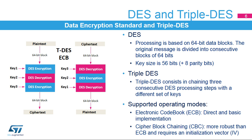ECB is a direct implementation, block after block, with no dependencies between them. It can be used safely with small messages. For larger messages, CBC is preferred, since it efficiently randomizes the encrypted output. Triple DES consists in chaining three consecutive DES operations for the same block of 64 bits with either the same key or with three different keys. As with DES, block chaining can follow either ECB or CBC.